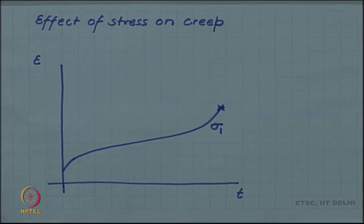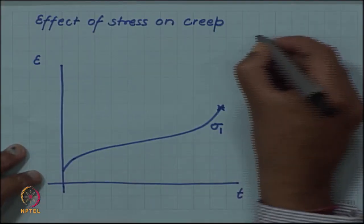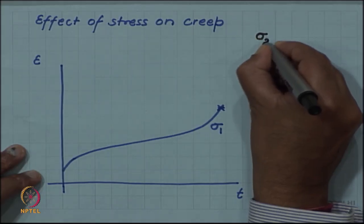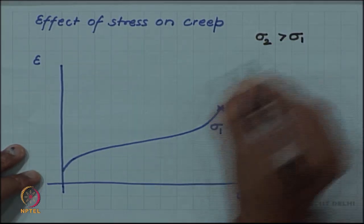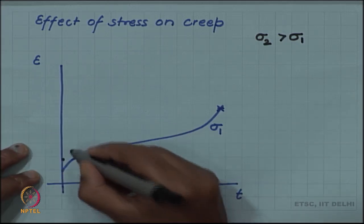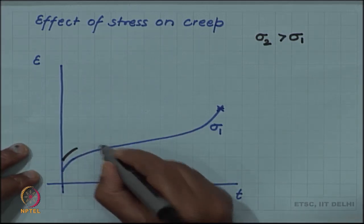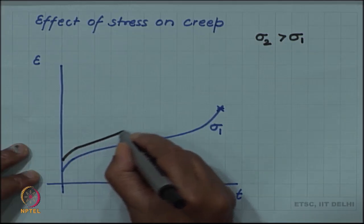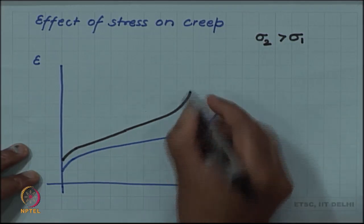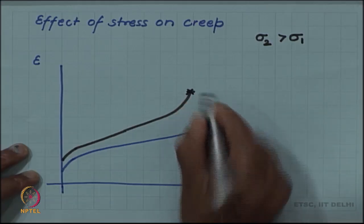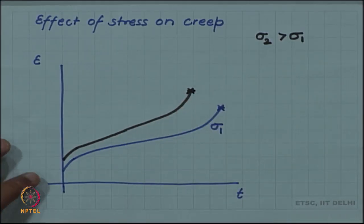If this test is supposed done at a stress sigma 1, and if we now conduct a test at another stress sigma 2 greater than sigma 1, then the initial strain will be more. At the same time, the steady state creep rate will be higher and finally, the creep life will be shorter.